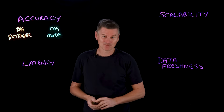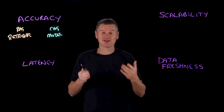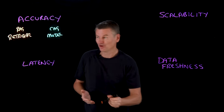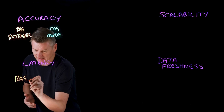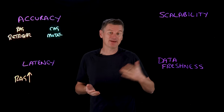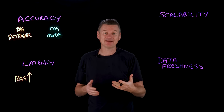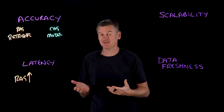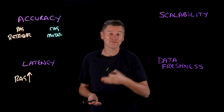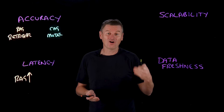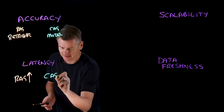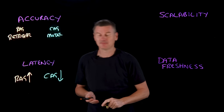What about latency? RAG introduces an extra step — namely retrieval — into the query workflow, and that adds to response time. Latency with RAG is a bit higher because each query incurs the overhead of embedding the query, searching the index, and then having the LLM process the retrieved text. But with CAG, once the knowledge is cached, answering a query is just one full pass of the LLM on the user prompt plus the generation — there's no retrieval lookup time. So when it comes to latency, CAG is going to be lower.